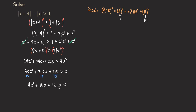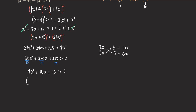So now this is a quadratic, and we try to see if we can factor it; if not, we can use the quadratic formula. For the 4, we can try 2x times 2x. And then for the 15, we can try 5 and 3. Multiplying following the arrows: 2x times 3 is 6x, and 2x times 5 is 10x. Adding them together gives 16x, and since all the signs are positive, this works. So factoring gives us (2x + 5)(2x + 3) greater than zero.